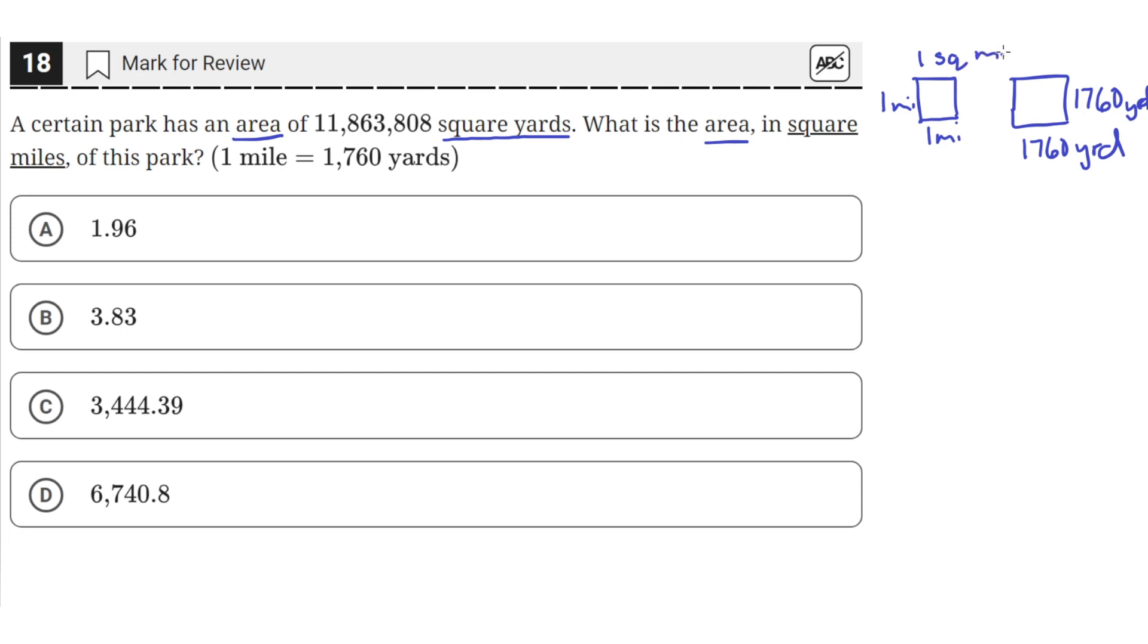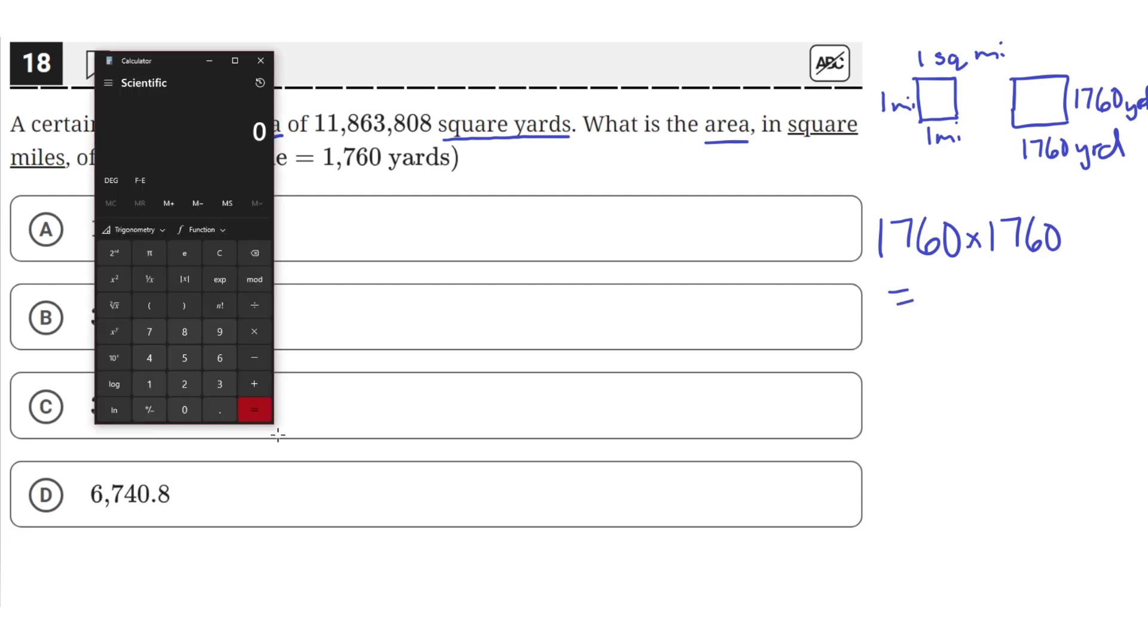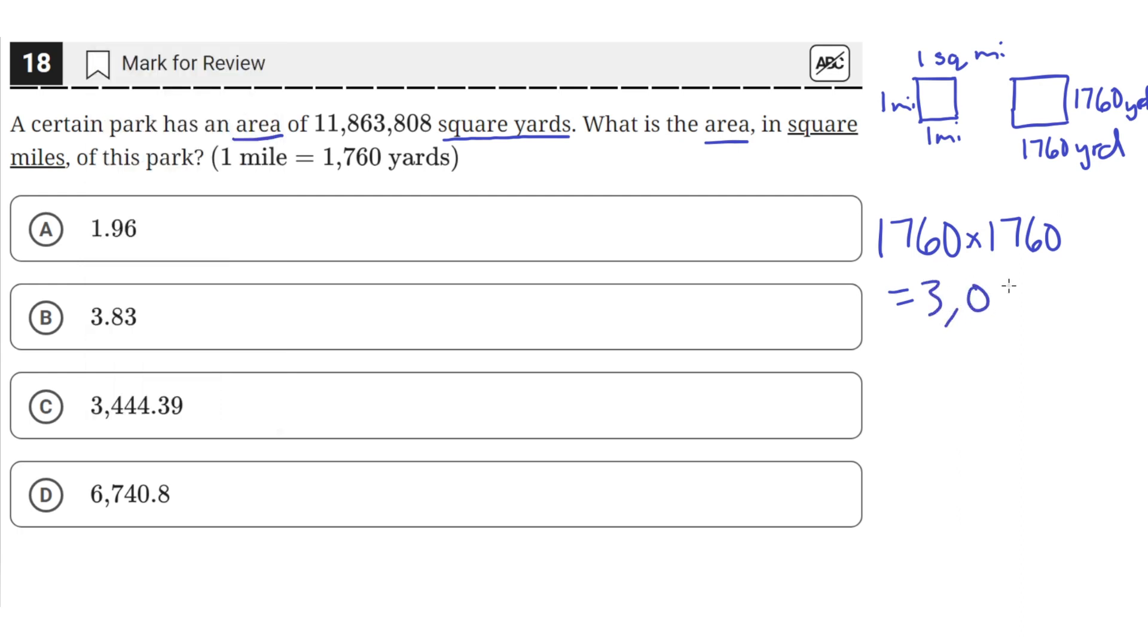Then that means that one square mile is equal to 1,760 times 1,760 yards. So if we do 1,760 times 1,760, we get, let's put that into our calculator, 1,760 times 1,760. So that's 3,097,600 square yards.